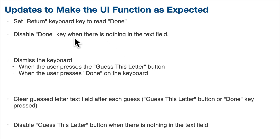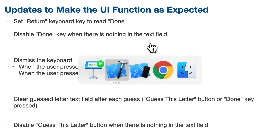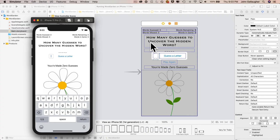Next, we want to set the return key on the keyboard to read 'done'. We also want to disable the done key when there's nothing in the text field, because the user shouldn't be able to click done to submit a guess unless there's actually a letter in the text field. If I type a letter and then backspace so the text field is empty, my return button is still active. Let's disable it if the field is empty.